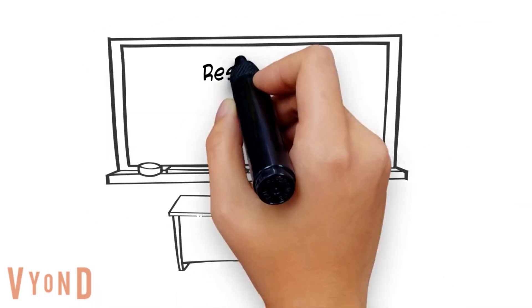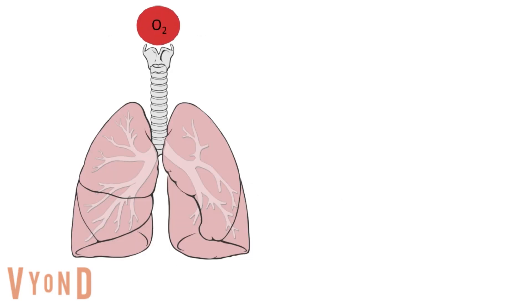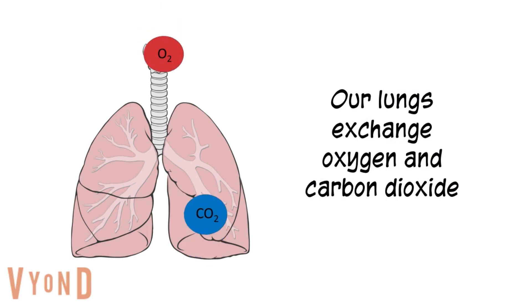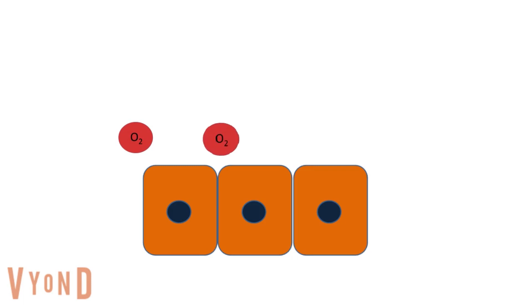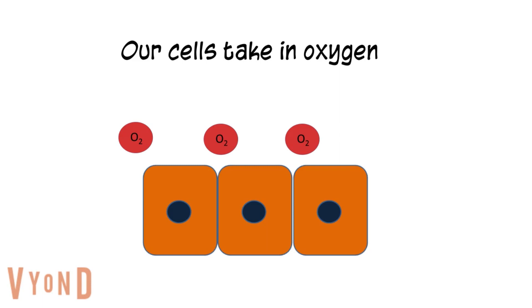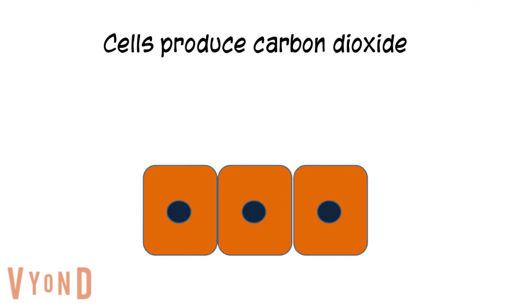Let's learn about carbon dioxide transport in the blood. Our lungs exchange oxygen and carbon dioxide. Our cells take in oxygen and use it for making energy to keep us alive. The cells also produce carbon dioxide that must be carried to the lungs by way of the blood.